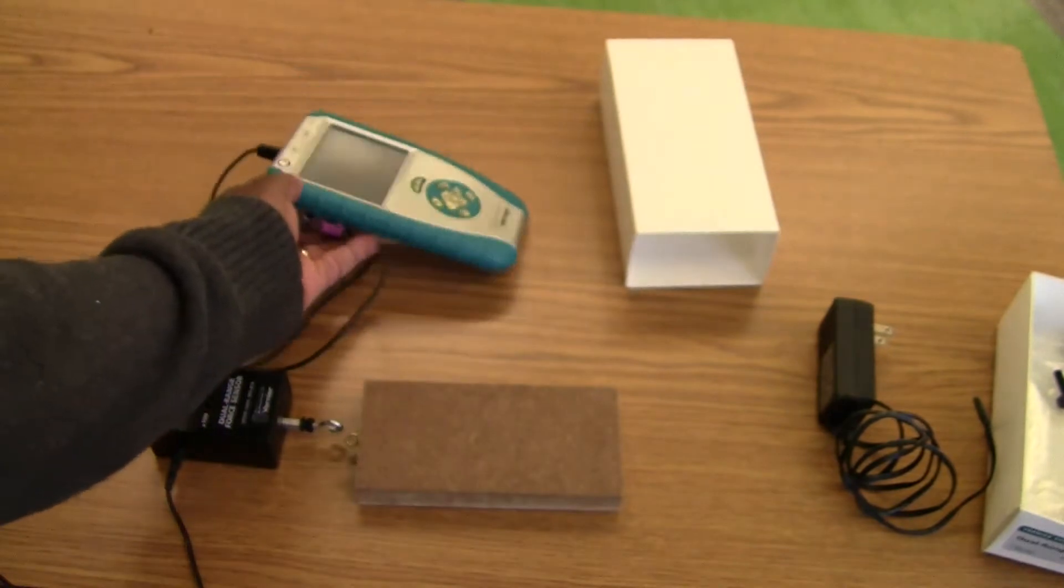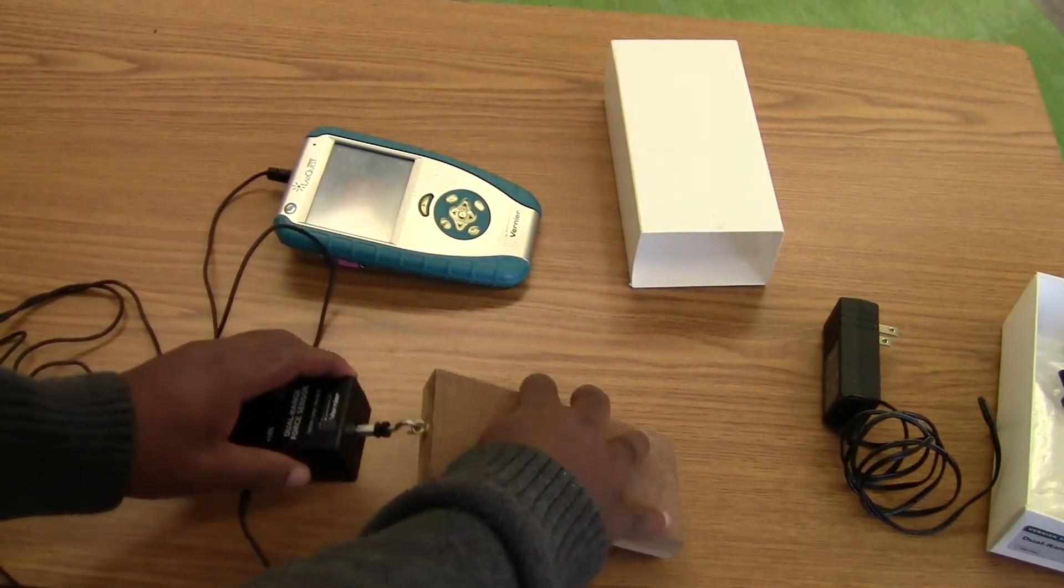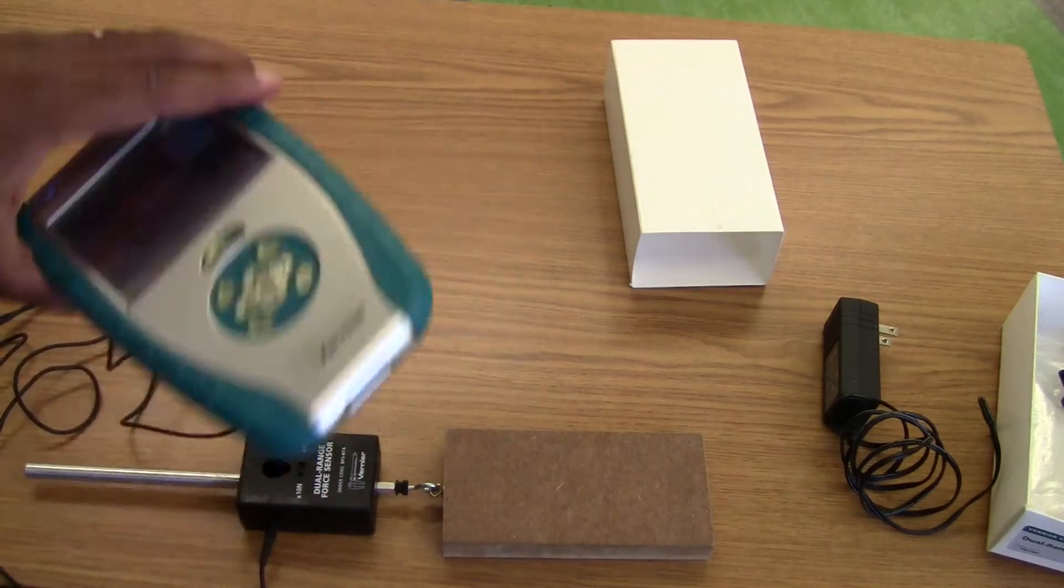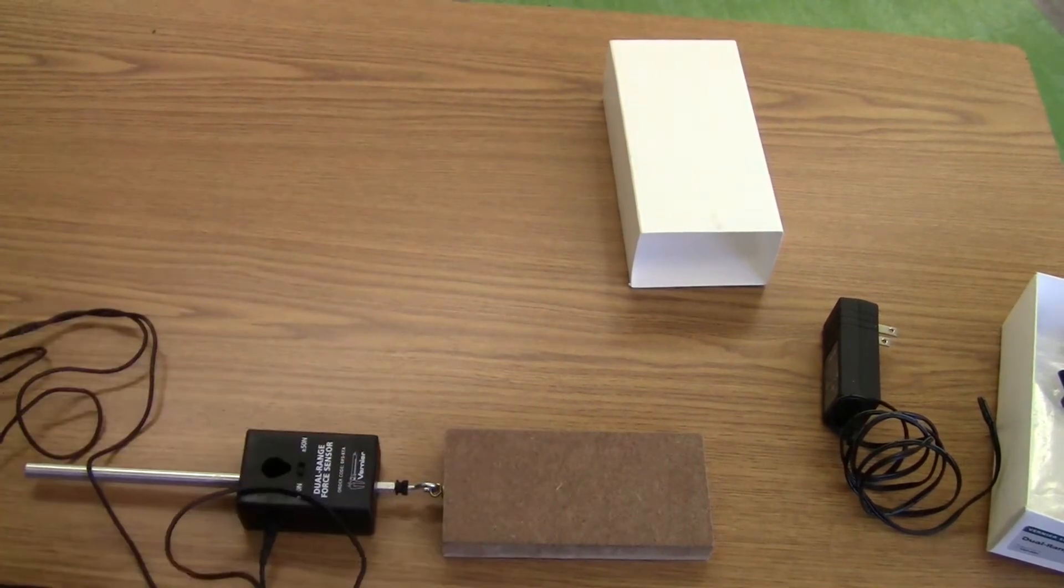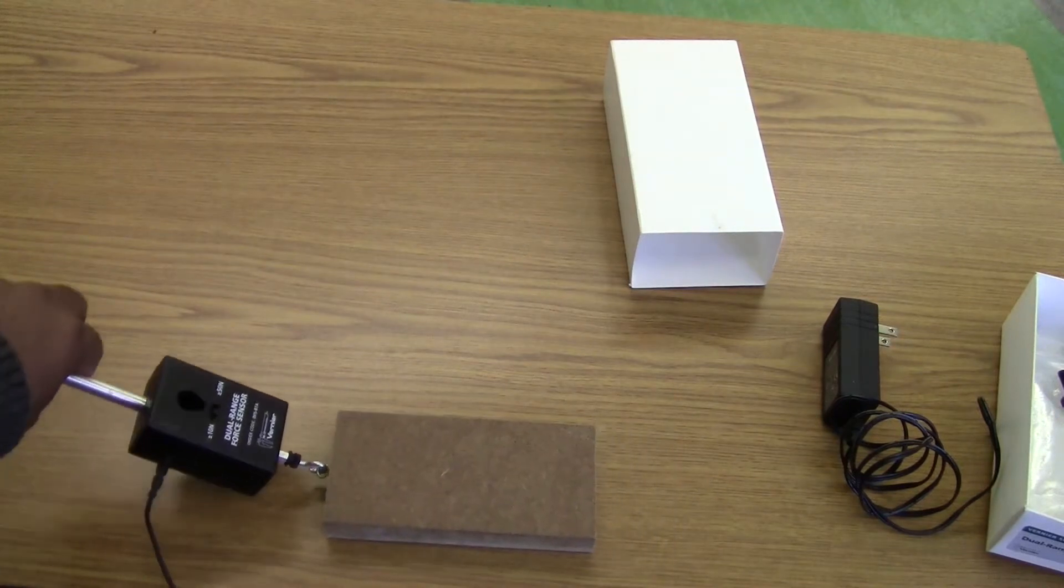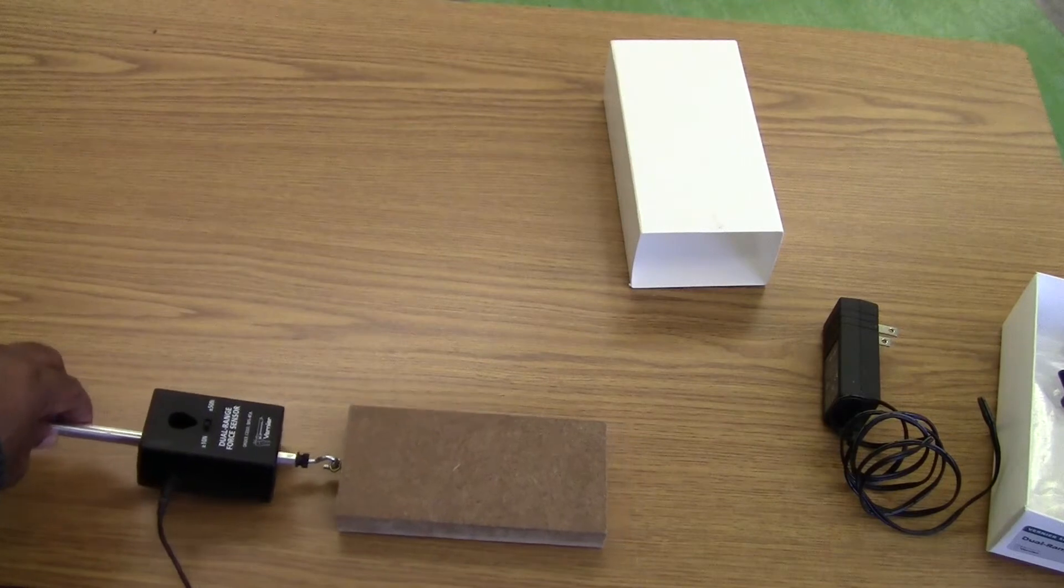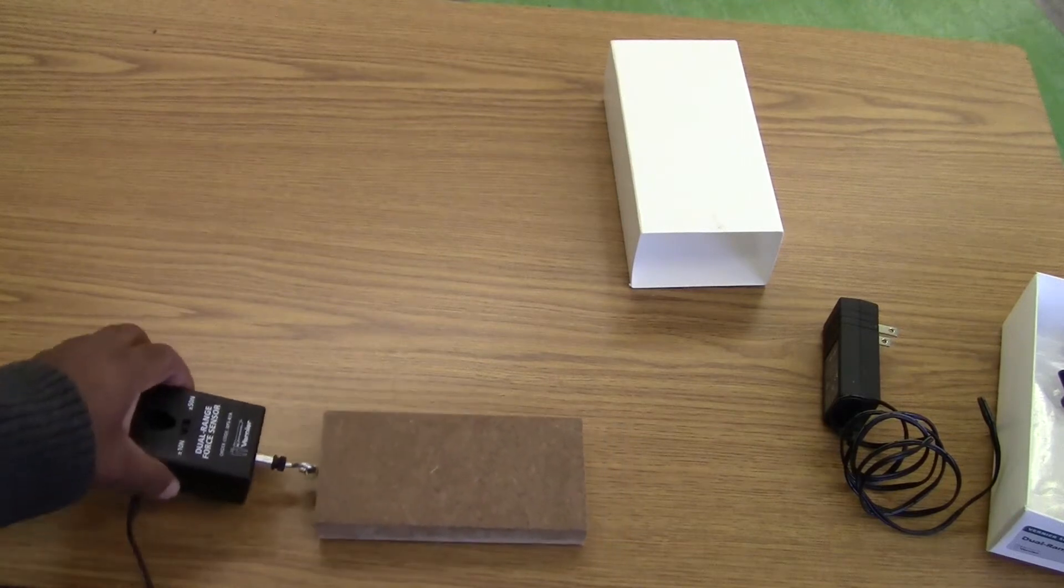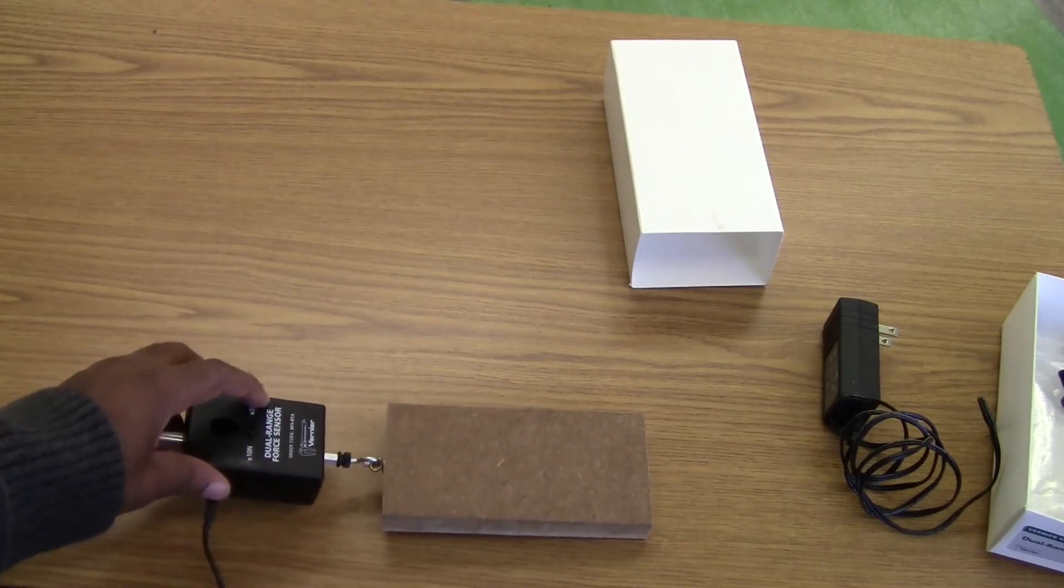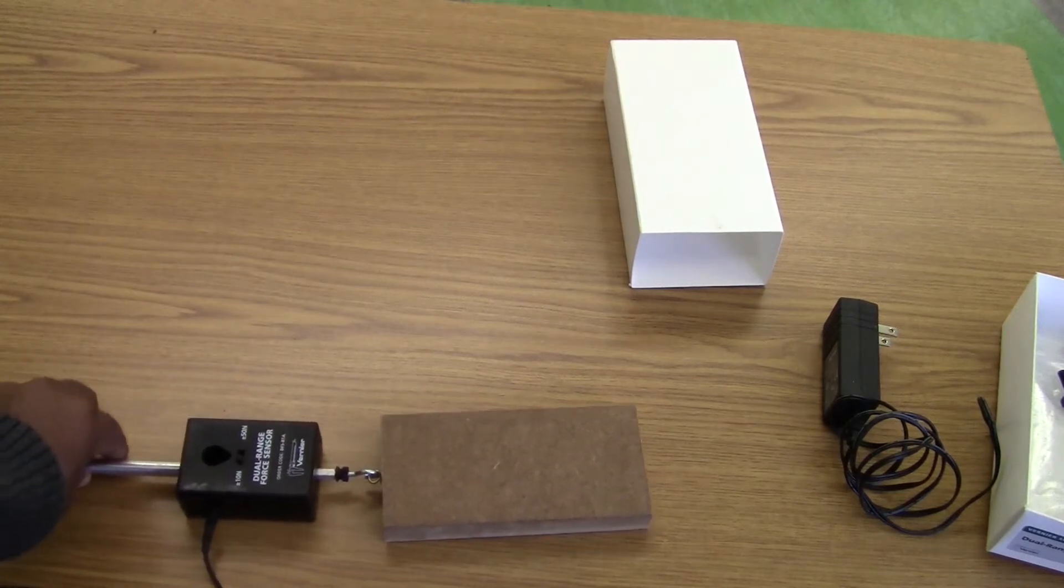We can hook our sensor to whatever we'd like to pull. As we're pulling, what we need to do is just pull across. We don't want to pull up because that is also getting the gravity, so we just want to pull straight across. We don't want the sensor to touch the table as well because we're also measuring the friction of the sensor against the table.